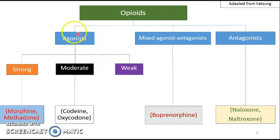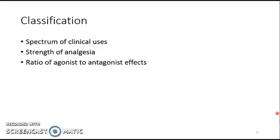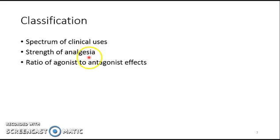In cases of toxicity with opioid agonists like morphine and methadone, you can reverse the effects by giving naloxone. Overall, opioids can be classified in at least three ways: by spectrum of clinical use, by strength of analgesia (strong, moderate, or weak), and by the ratio of agonist to antagonist effects.